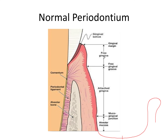The free gingiva is called free because it's not bound down, while the attached gingiva is firmly attached and bound down to the underlying bone, and the mucosa is once again not bound down. These are important considerations, particularly for oral pathology, where some lesions appear on bound tissue while others do not. Also note that the free gingiva and the attached gingiva are keratinized, while the alveolar mucosa is not. So the free gingiva is keratinized but not bound down, the attached gingiva is both keratinized and bound down, and the alveolar mucosa is neither bound down nor keratinized.